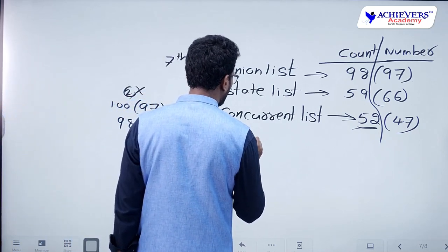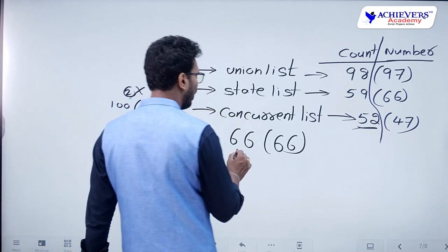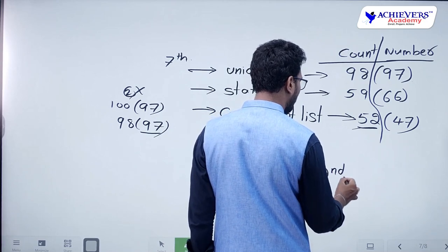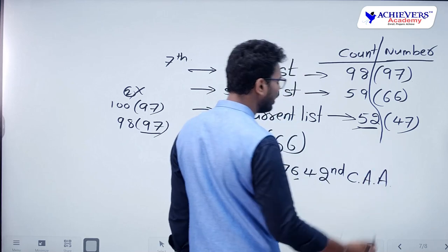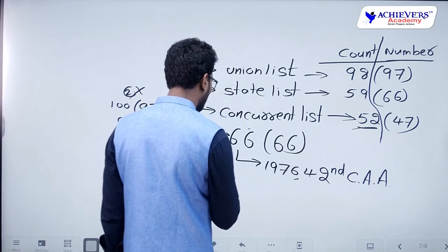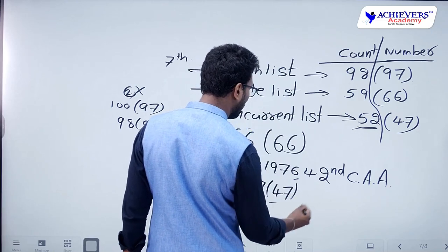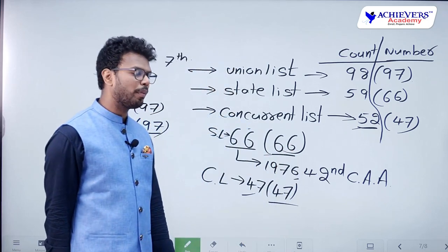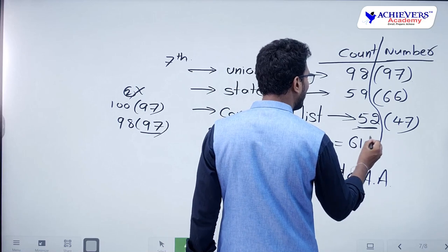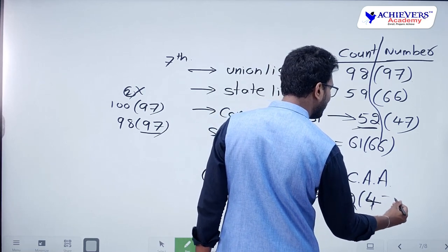With respect to the State List, initially the count was 66 and the number was also 66. But in 1976, through the 42nd Constitutional Amendment Act, five provisions from the State List were transferred to the Concurrent List. So the State List count dropped to 61 while the number remained 66. The Concurrent List's count increased from 47 to 52, while its number remained 47.